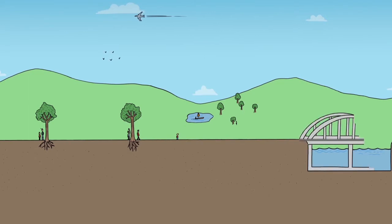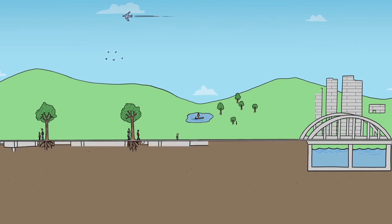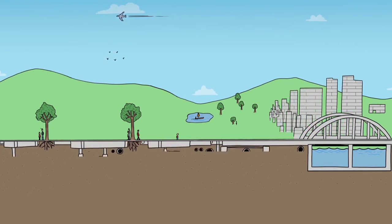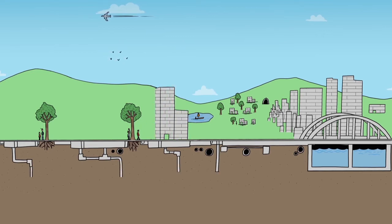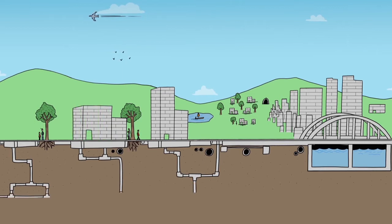Concrete fulfills many of the requirements of the circular economy. It is manufactured from local materials. It is durable. Many of the buildings, bridges, dams and tunnels we use today were constructed decades ago using concrete. That is an efficient use of resources.